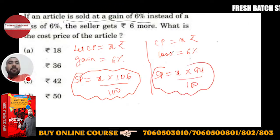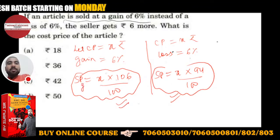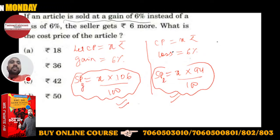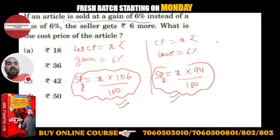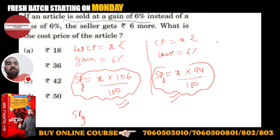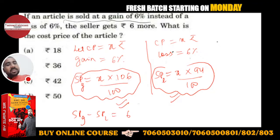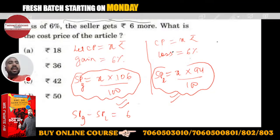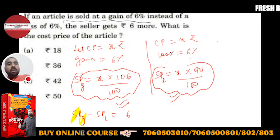Jab aap gain mein bechoge, woh SP is wale SP se zyada hoga. SPG se SPL minus karo to 6 rupaye milte hain. Matlab: SPG − SPL = 6. Agar loss ke bajaye gain se becho to aapko 6 rupaye zyada milenge.